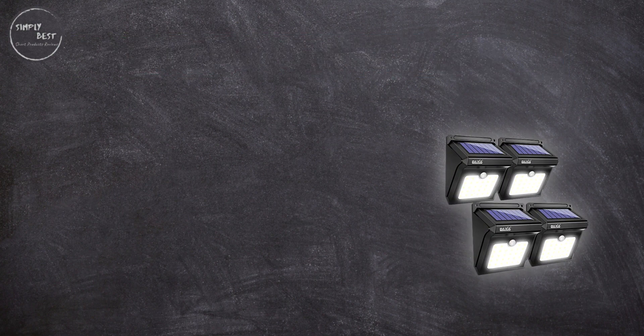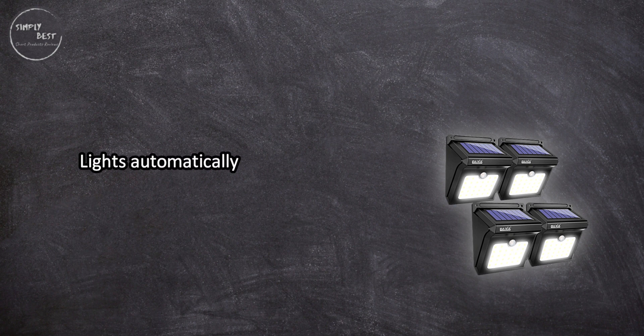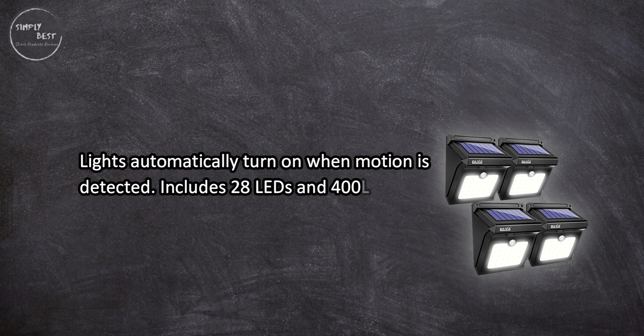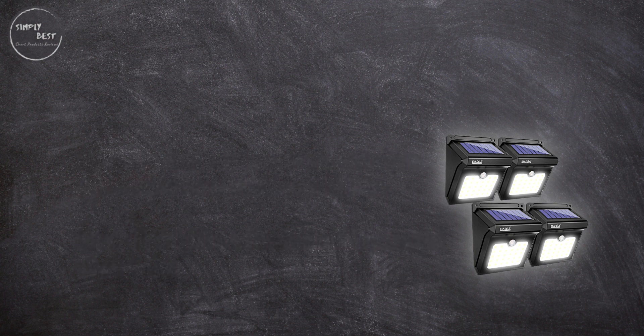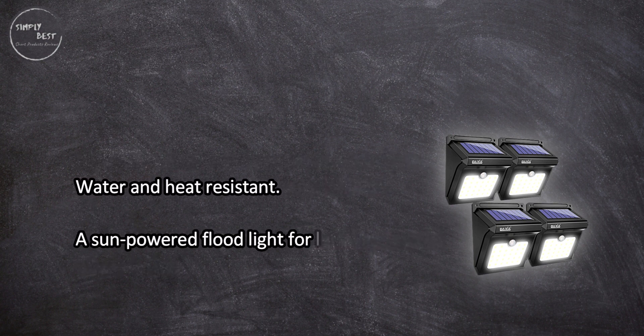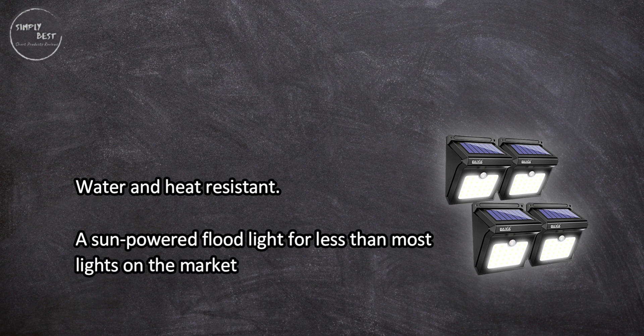Lights automatically turn on when motion is detected. Includes 28 LEDs and 400 lumens. Small-sized light provides a surprising amount of coverage and is water and heat resistant. A sun-powered floodlight for less than most lights on the market, but lacks in brightness and needs to be in a position where it gets sun exposure.